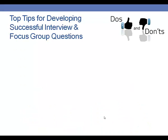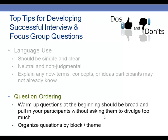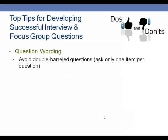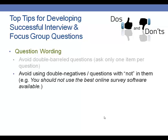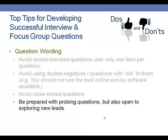How can you develop successful interview and focus group questions? Be clear, be simple, and be non-judgmental. Any new terms, concepts, or ideas should be explained up front. Remember to start with warm-up questions — questions that don't take a lot of thought but can get people talking. Organize your questions by block and theme. Question wording should be simple; avoid questions that ask two things at once — only one item per question is most desirable. Avoid using questions with the word 'not' in them, as they're very difficult for people to understand. Close-ended questions do not provide rich qualitative data, so keep questions as open-ended as possible. Be prepared with probing questions, but also open to exploring new leads that participants might raise.